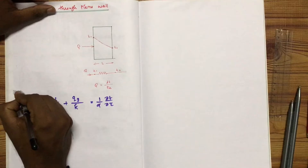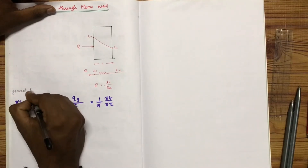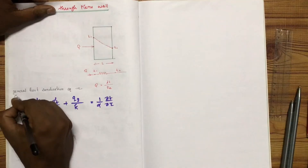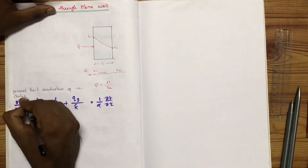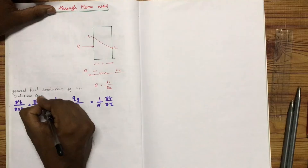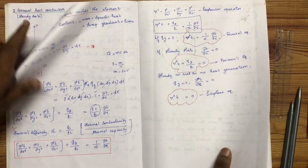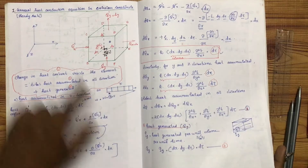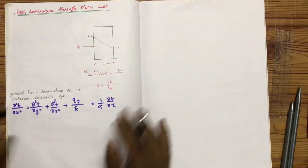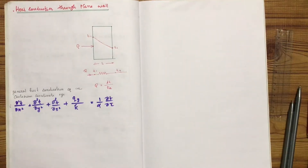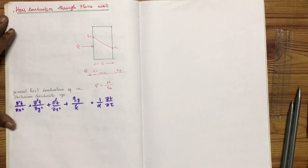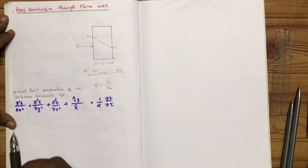Considering the general heat conduction equation in the Cartesian coordinate system, we apply assumptions. The equation has three assumptions and three conditions. The first assumption is that we are only considering one-dimensional heat flow.